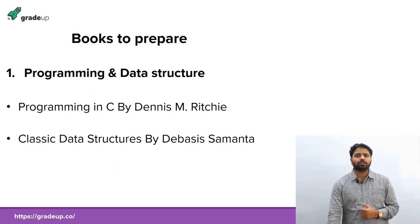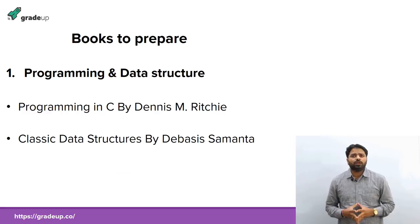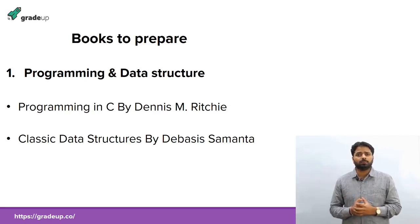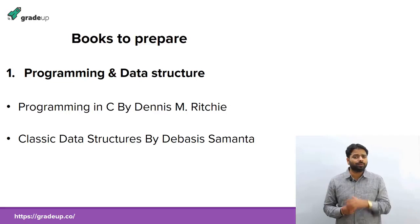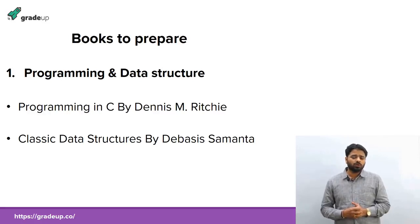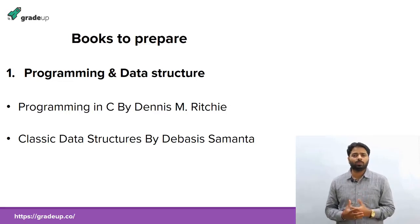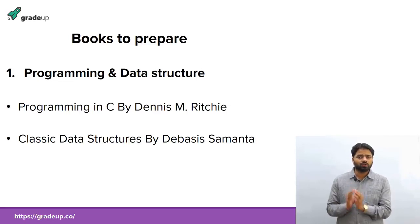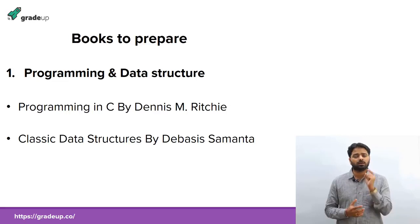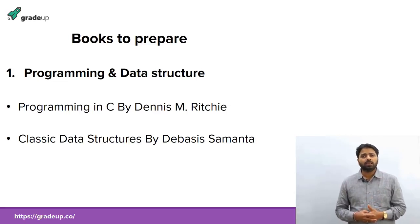Now let's see what books are required to prepare for GATE Computer Science. Programming and Data Structures is a very important subject and there are hundreds of books available in the market. I suggest you prepare a maximum of one textbook to cover the whole syllabus, though for some important topics you may need to look at more resources. One textbook is enough for preparing one subject.